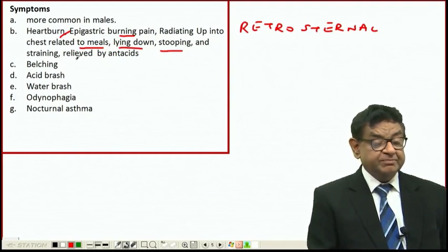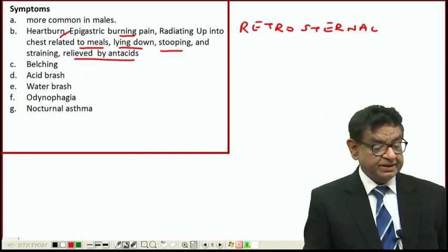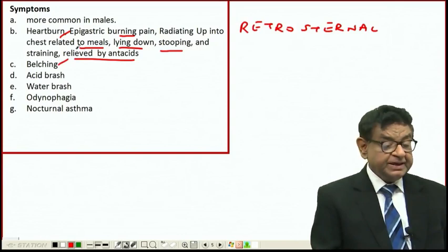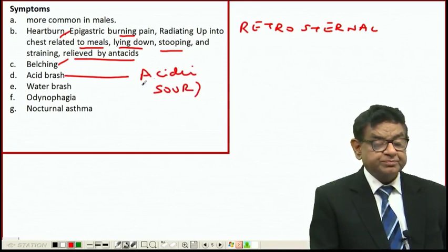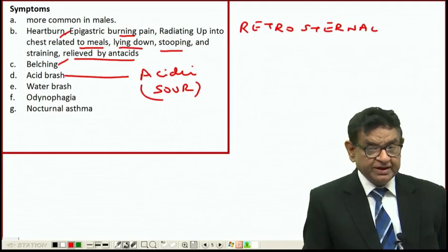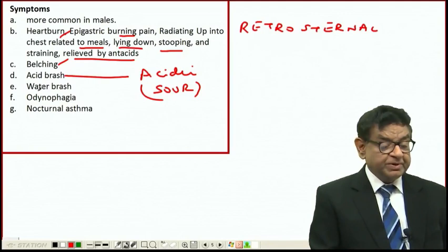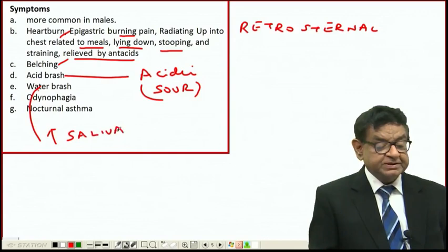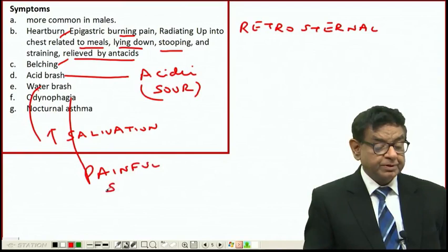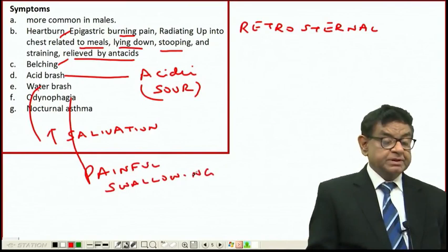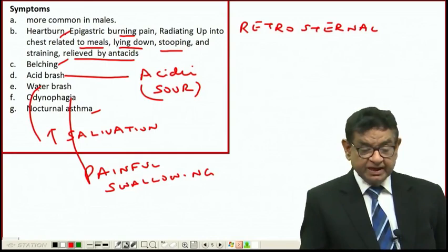It is relieved by antacids because they neutralize the acid. Belching is another symptom of GERD. Acid brash is when patients complain that sour fluid comes from the stomach, which is regurgitation of acid right up to the mouth. Water brash means excess salivation.